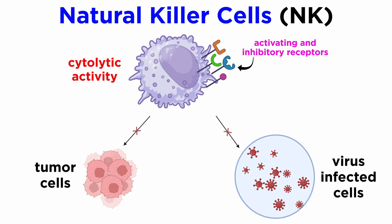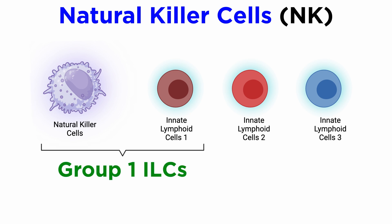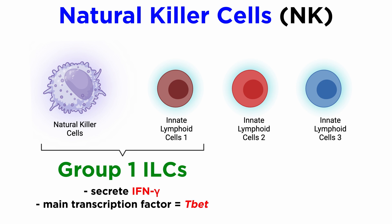These cells express several activating and inhibitory receptors that recognize the modified expression of proteins on target cells. NK cells make up 5-15% of human peripheral blood cells. NK cells represent the prototypical member of the innate lymphoid cells family, or ILC. Together with ILC1s, NK cells are considered to be a subset of group 1 ILCs, which are characterized by their typical capacity to produce interferon gamma and their dependency on transcription factor TBET for functioning.